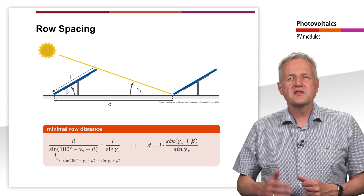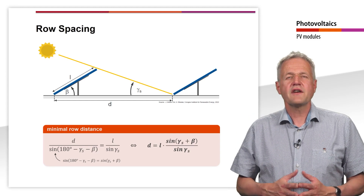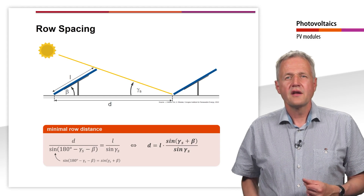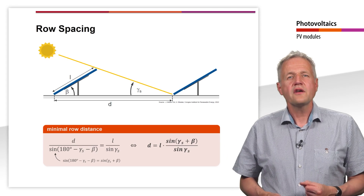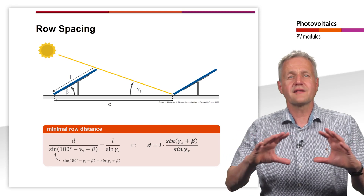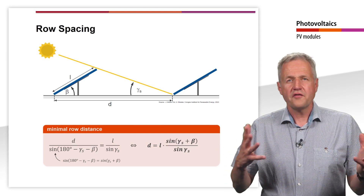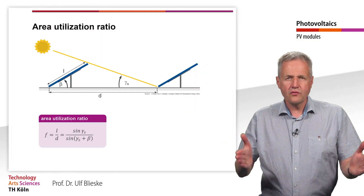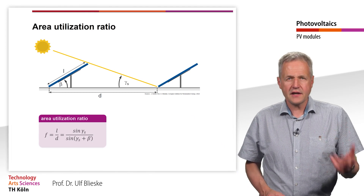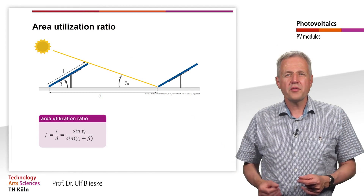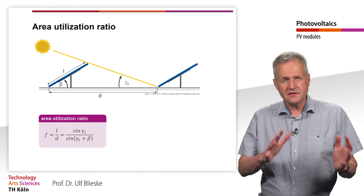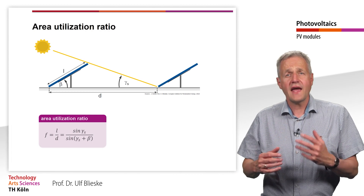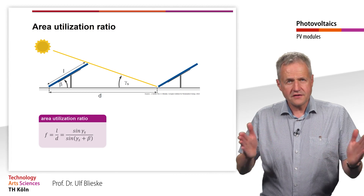The minimum row distance results from the tilt angle beta, the sun elevation gamma at solar noon of the 21st of December, and the length L — or in case of landscape mounting of the modules, the width. Due to the required distance between the module rows, only a part of the available area can be used. For this purpose, we define the area utilization factor F, which is the ratio of module length or width L and row distance D.